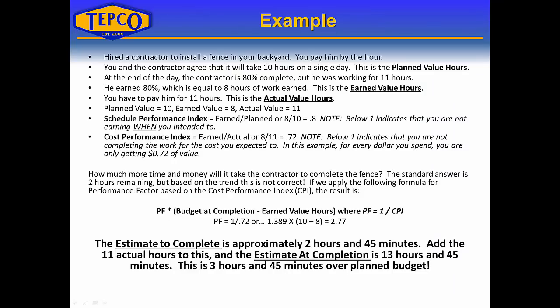Let's look at a simple example that covers all three components: planned value, earned value, and actual value. Say you hired a contractor to install a fence in your backyard, paying him by the hour. You agree it's going to take about 10 hours on a single day — that's the planned value. At the end of the day, the contractor is 80% complete but was working for 11 hours, so he earned 80%, which equals 8 hours of earned value. But we have to pay him for 11 hours — that's the actual value.